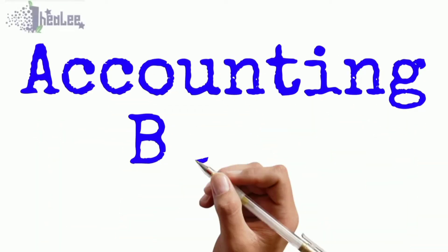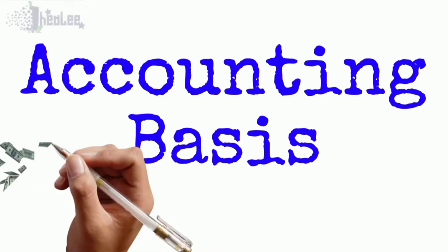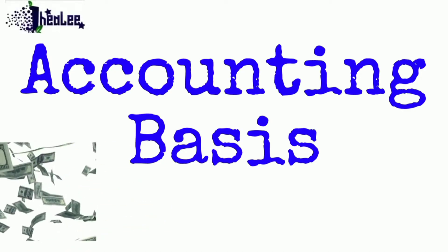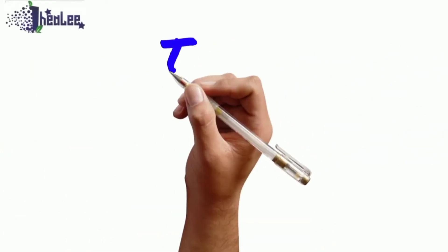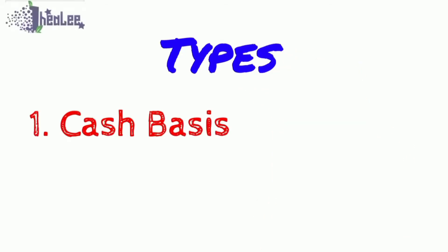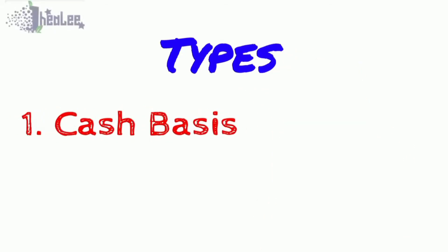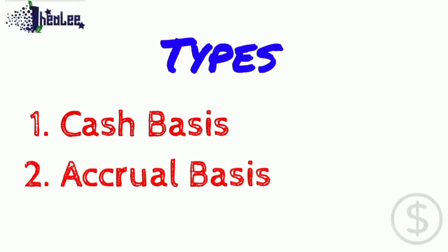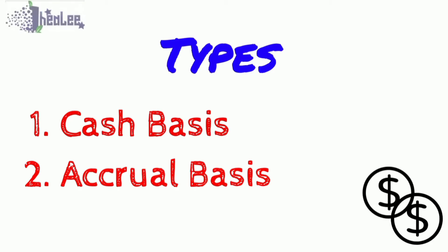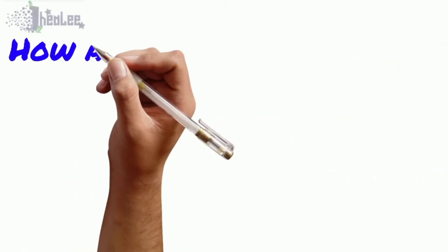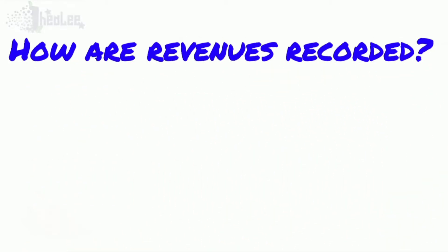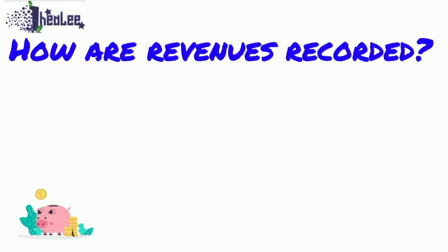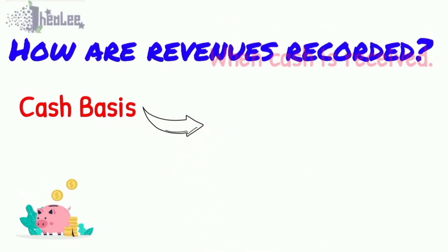Today we're going to look at accounting basis. There are two types of accounting basis: the cash basis and the accrual basis. These are basically the methodology under which revenues and expenses are recognized in the financial statements of a business. Let's look at how revenues are recorded under each.